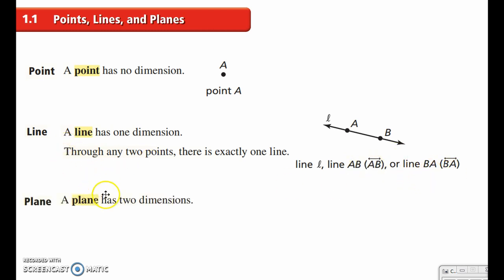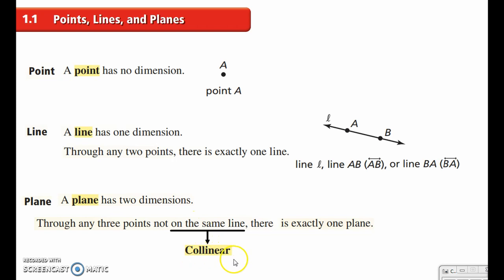A plane has two dimensions. And through any three points not on the same line, there's a term for on the same line, and that's collinear. It's a term you need to learn. Through any three points that are not on the same line, there's exactly one plane. So right here, see these three points A, B, and C, are not on the same line. So there's one plane that goes through these. Now this plane extends in all directions forever. It looks like I have drawn a rectangle in perspective or a parallelogram here, but it's just to symbolize the plane that goes on forever. So I could name this plane. I could name it plane M or plane ABC, three non-collinear points.